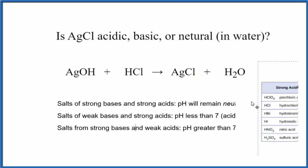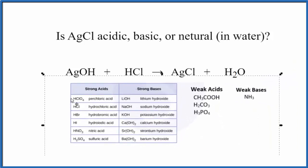Now we need to figure out the strengths of that acid and base. This is a really useful table to memorize. Let's see. AgOH is not on our list of strong bases, so it's a weak base.